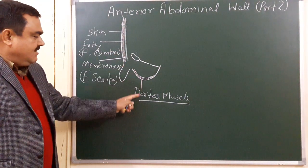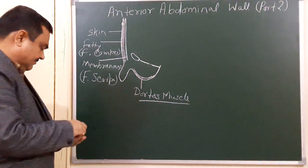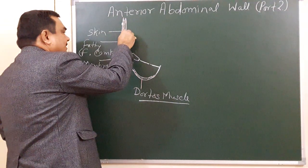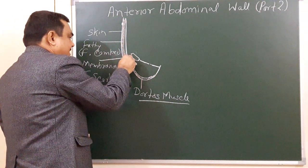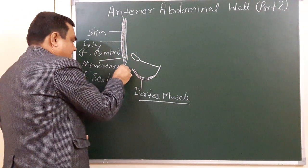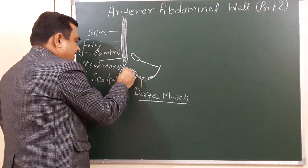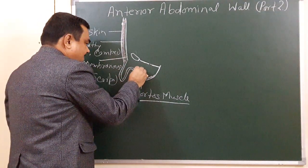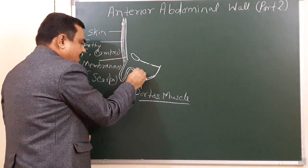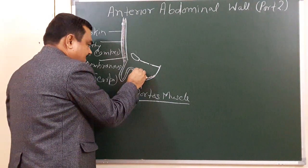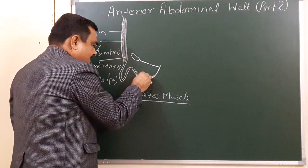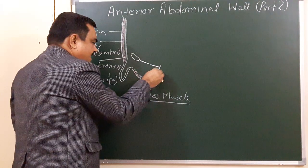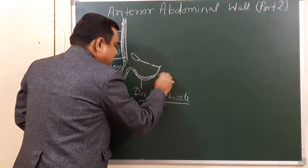The membranous layer extends into the penis, and this membranous layer fuses with the Colles' fascia. This fascia is Colles' fascia — the membranous layer fuses with the Colles' fascia.